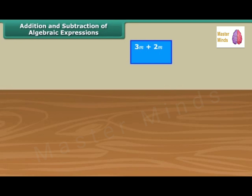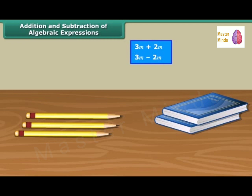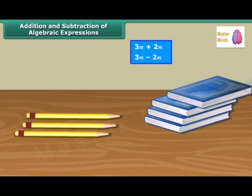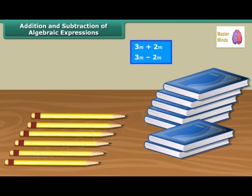We can only add or subtract like terms. Think of it like this: on a table we have three pencils and two books. We cannot add the three pencils to the two books because they are not the same kind of objects. If we get another three pencils and five books, we now have six pencils and seven books — but we still can't combine them since they are different. Similarly, if we remove one pencil from six pencils, we are left with five pencils but still have seven books. It's quite similar with algebra — we can only add or subtract similar objects.